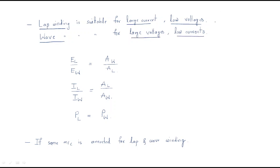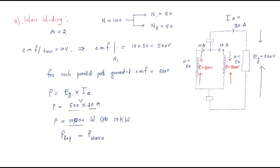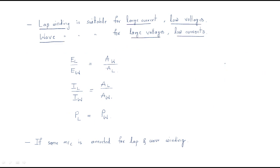Wave winding is suitable for large voltages and low currents. For the same power, the voltage is 500 volts and the current is 20 amps. So wherever high current is required, prefer lap winding; wherever high voltage is required, go for wave winding. The choice depends on the application.